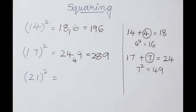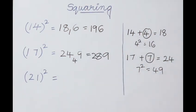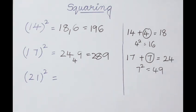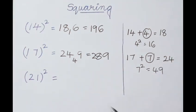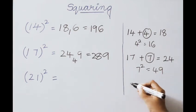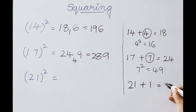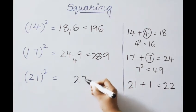Next example: 21 squared. Previous examples all used base 10. But now the base is 20 — there is a slight difference. For 21, the excess value above 20 is 1. For the given question 21, add the excess value 1: we get 22. Write down the first part answer 22.